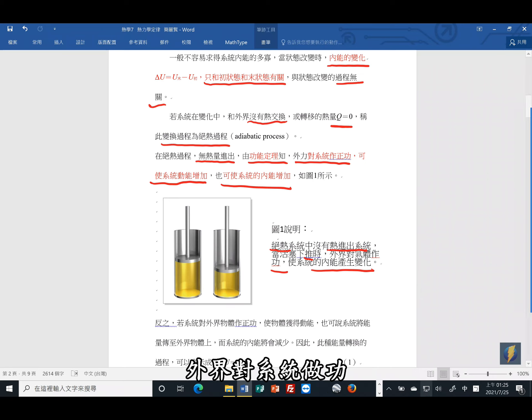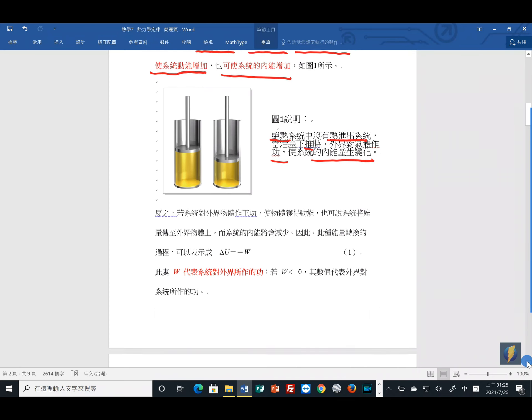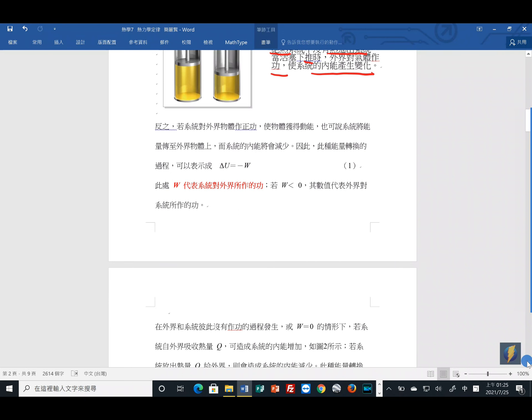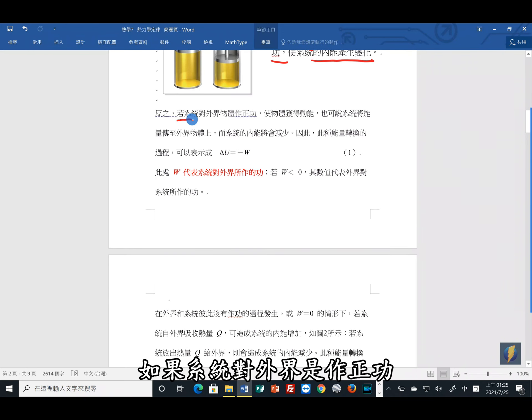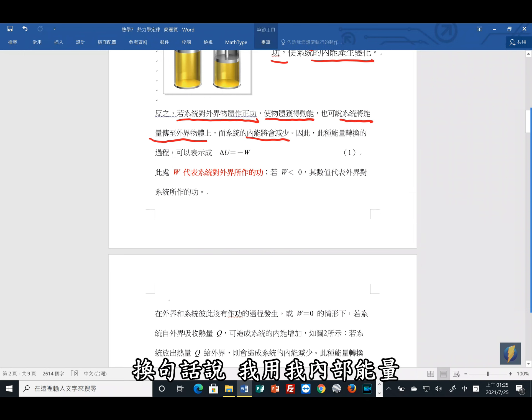这就是活塞被往下压,所以是外界对系统做功,则系统的内能会有变化。同样的,如果系统对外界是做正功,则物体会获得动能,外界的物体。也可以说系统是将能量传到外界的物体上,所以系统的内能将会减少。换句话说,我用我内部能量去对外面做功,所以我自己的能量就会减少。